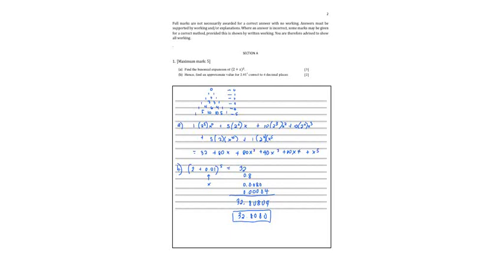In problem number one, it says find the binomial expansion of the quantity 2 plus x raised to 5. I can use combination to find the coefficient of the terms or I may use Pascal triangle. So here I opted to use Pascal triangle so I can find the coefficients. So for expanding, I can use this part where these are the coefficients of the terms.